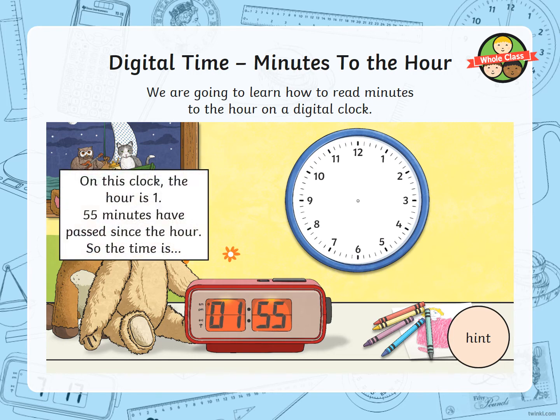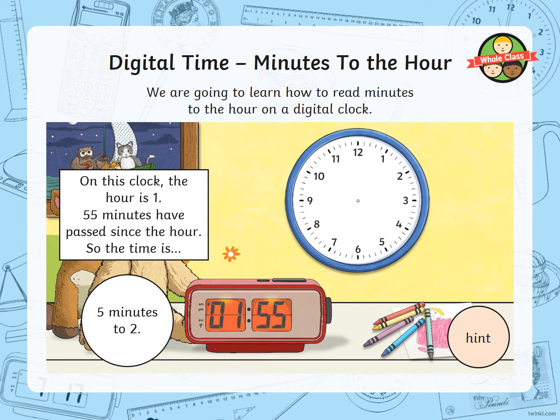On this clock, the hour is 1 and the minutes past is 55. Remember, we've got to go from 55 to 60, and that's 5 minutes, so we would say this time is 5 minutes to 2. We say 5 minutes to 2 because the hour is already 1 and 55 minutes has gone past 1 o'clock. So it can't be 5 minutes to 1 — it has to be to the next hour, 5 minutes to 2.